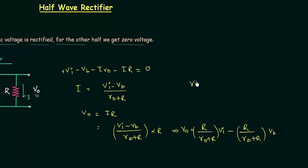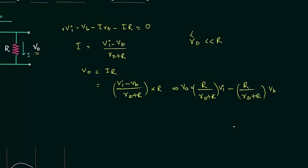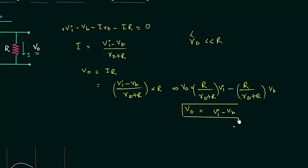Generally the diode resistance Rd is smaller than the load resistance R, so we can neglect Rd. Once we neglect Rd the output voltage VO is equal to VI minus VB. This is what we have in case of positive half cycle. The output voltage equals input voltage minus barrier potential, where VB equals 0.7 volts for silicon and 0.3 volts for germanium.